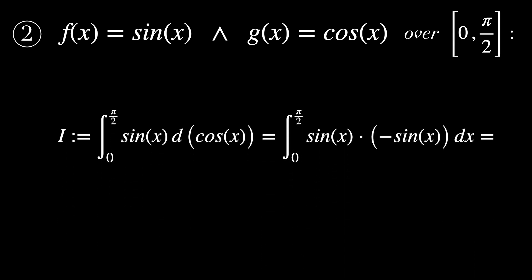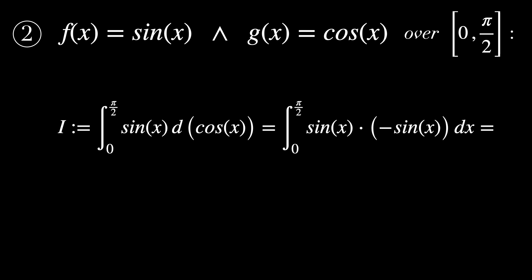The second example is the case in which f of x equals sine of x and g of x equals cosine of x. And we want to perform the integral over the interval [0, π/2]. Let's define I to be the Riemann-Stieltjes integral from zero to π/2 of sine of x d cosine of x. The derivative of cosine is minus sine. So in the end, we get minus π/4.